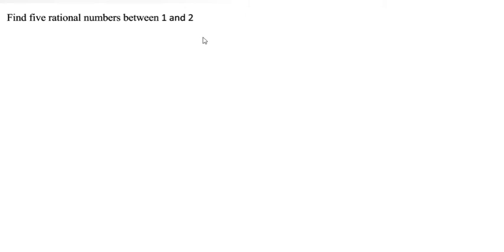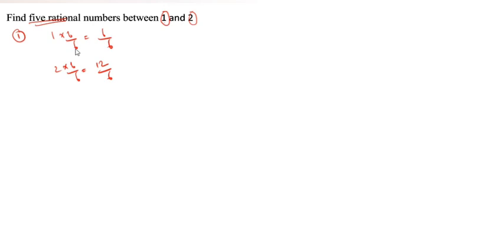Next one. Find 5 rational numbers between 1 and 2. We have two methods. Method 1: 5 rational numbers needed, so we take 6. 1 into 6 by 6 equals 6 by 6. 2 into 6 by 6 equals 12 by 6. In between: 7 by 6, 8 by 6, 9 by 6, 10 by 6, 11 by 6. You see 5 rational numbers appear. Don't write 6 by 6 or 12 by 6 — in between only.